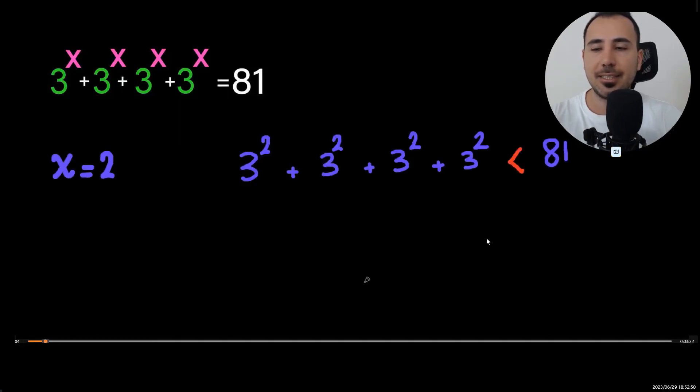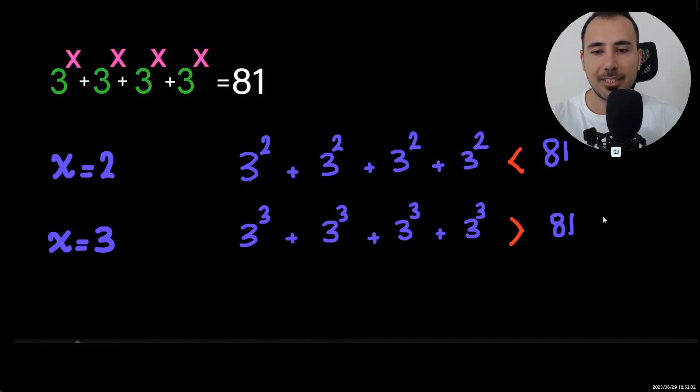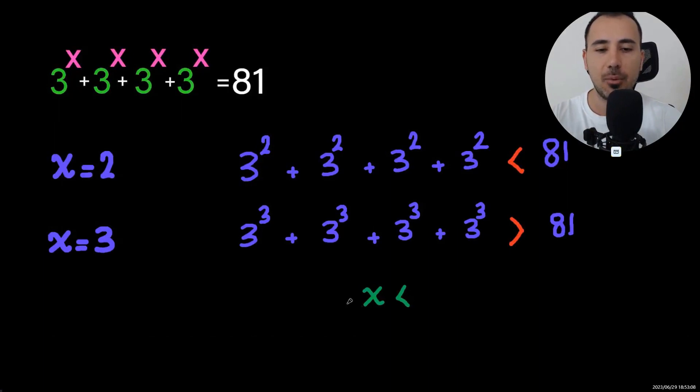Let's check x equals 2. As you see, the left-hand side will be 36, which is smaller than 81. Let's try x equals 3. As you see, we're going to have 4 27s, definitely greater than 81. So we know that the solution has to be between 2 and 3.